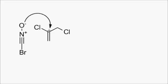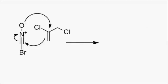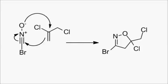The nitrile oxide then reacts with 2,3-dichloro-1-propene in the 2+3 cycloaddition. The intermediate isn't quite aromatic yet, but the oxygen can push away a chloride ion, and then the loss of a proton generates the isoxazole aromatic ring.